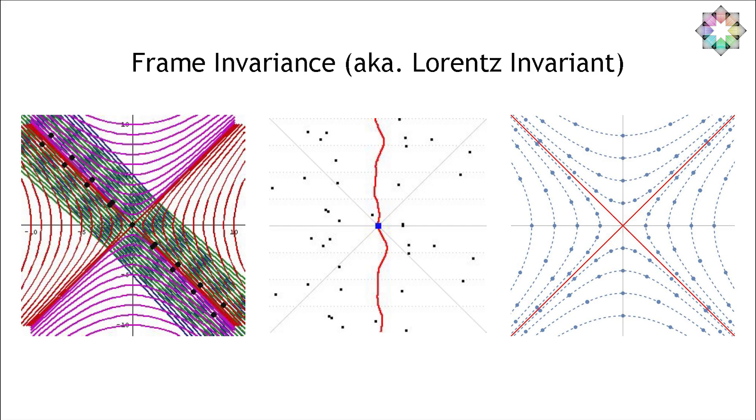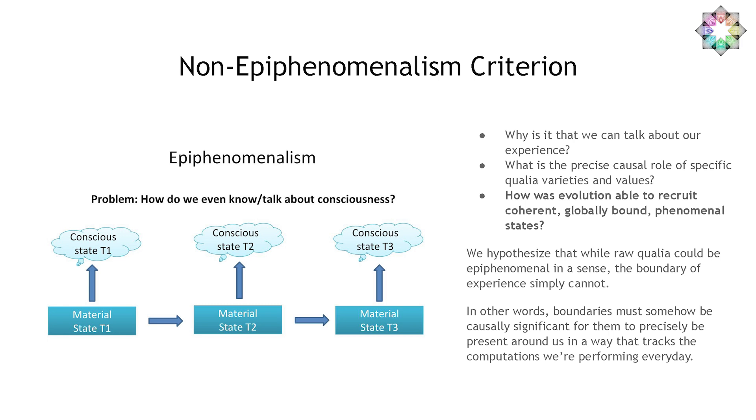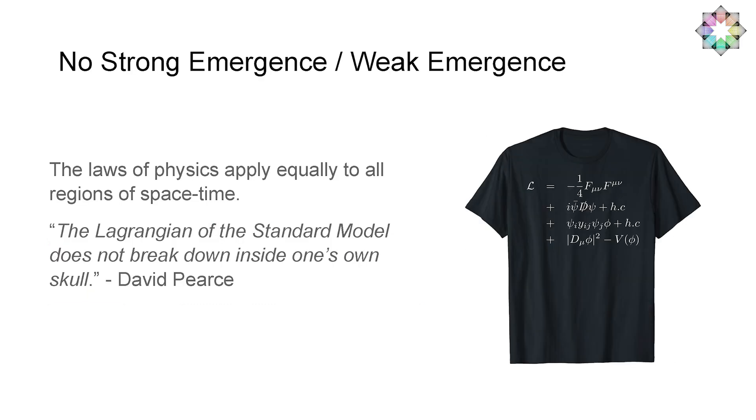So with all of that said, we propose that at the very least, the explanatory space where we find the solution to the boundary problem is in electromagnetic field topology. Let me walk you through a little bit of the reasoning behind this. Topological properties in the field might satisfy a lot of desirable criteria. First of all, they're frame invariant. Whether there's a topological pocket in the field is not something that really depends on how you look at it. As long as you gather enough data, it doesn't matter the frame of reference. It either is there or it isn't. Non-epiphenomenalism, I'll explain why with hopefully compelling data and arguments. And no strong emergence. Changes in the topology of the field require no modifications to the standard model. In fact, they're implied by Maxwell's equations. We don't even need to go to anything exotic here.